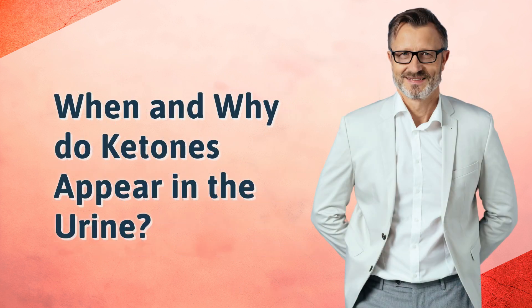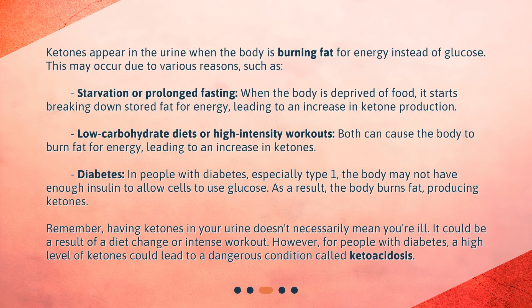When and why do ketones appear in the urine? Ketones appear in the urine when the body is burning fat for energy instead of glucose. This may occur due to various reasons such as starvation or prolonged fasting, when the body is deprived of food and starts breaking down stored fat. Low carbohydrate diets or high intensity workouts can also cause the body to burn fat, leading to an increase in ketones.